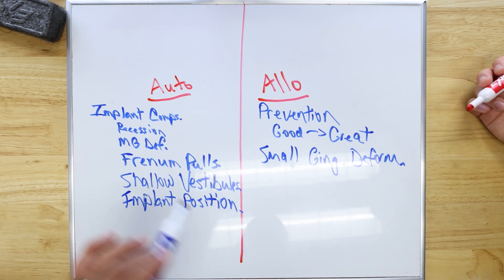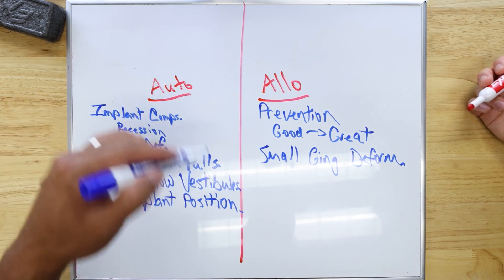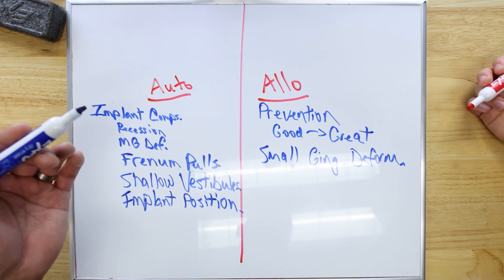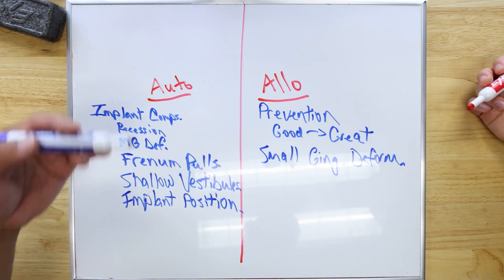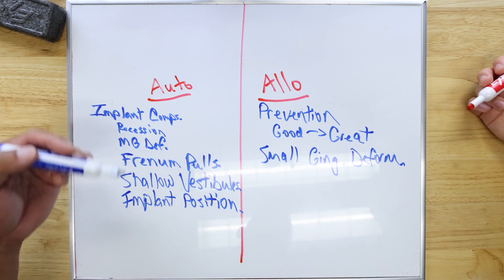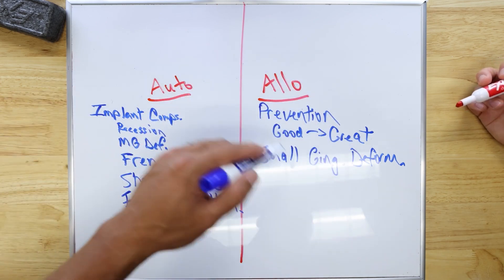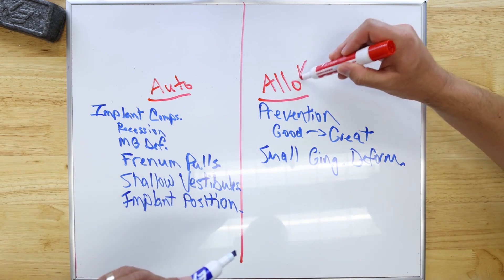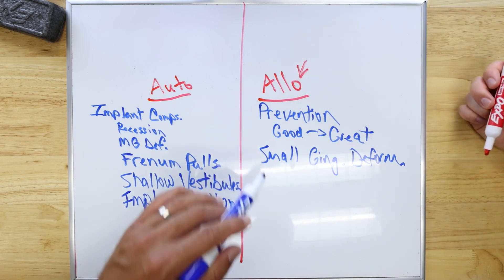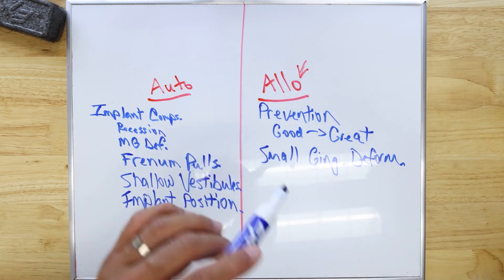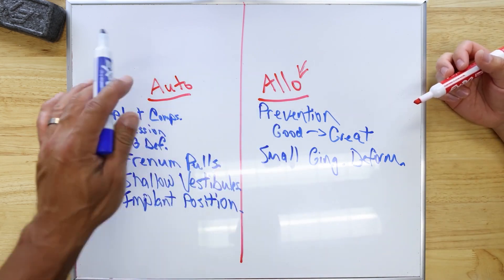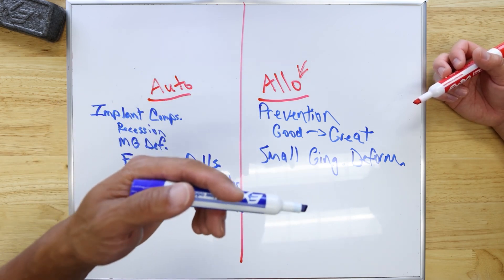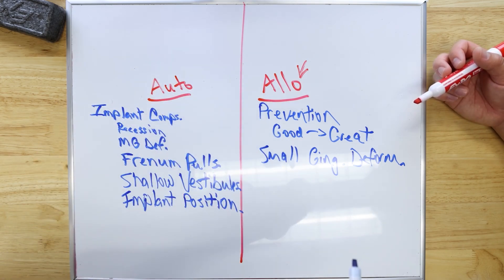Whereas autografts — any time you've already restored the tooth, you almost always have to go with an autograft because you don't want to make things worse. If you're doing a revision to an existing implant, you're not going to use an allograft. The thing you have to worry about with allografts more than autografts is the risk of catastrophic failure.